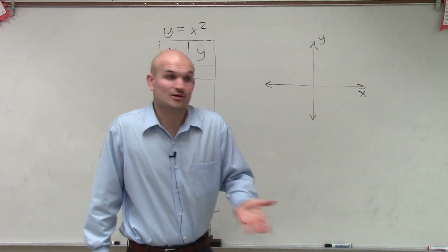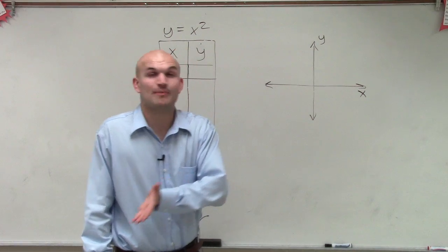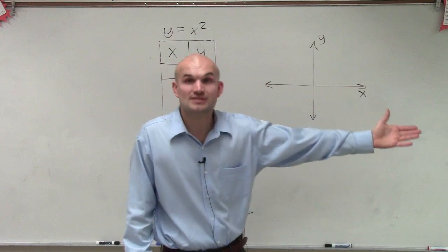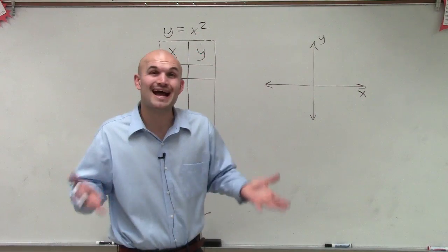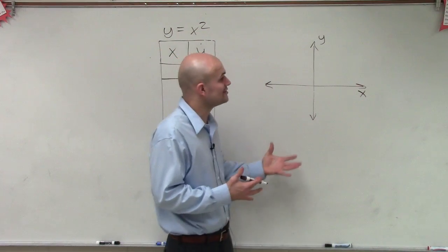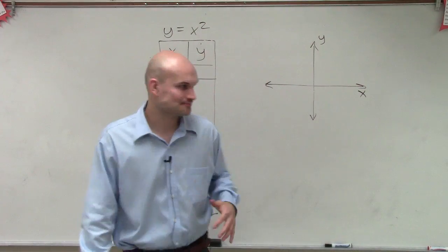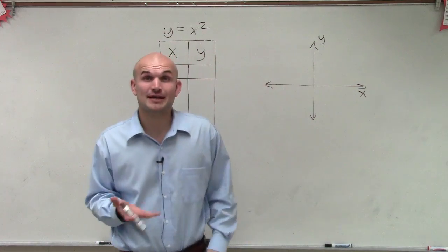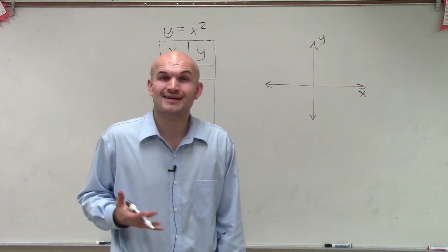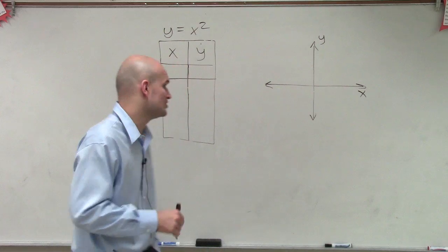So you can pick any number. You can pick negative 1, you can pick positive 10, you can pick 1,000, you can pick the square root of 3. You can pick any kind of number. And as long as it's a continuous function, you're going to have an output value. But as far as graphing, when we're graphing something, we want to use as many whole numbers as possible, and also the simplest numbers that we can choose.